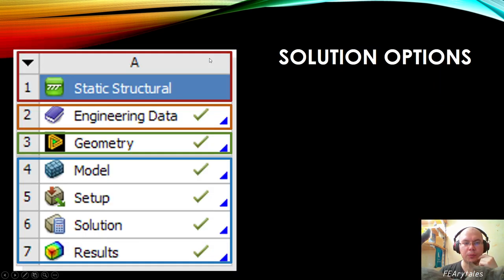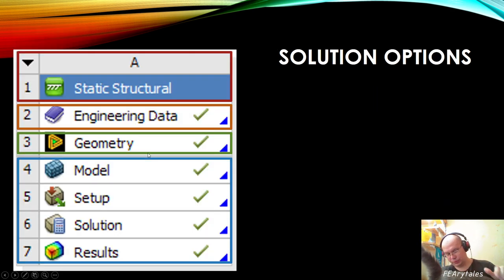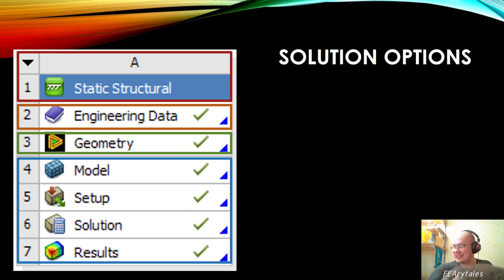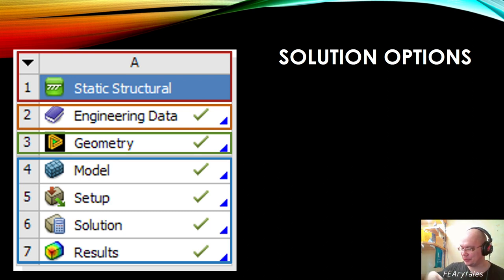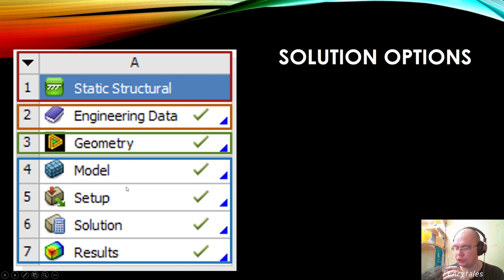Let's talk in more detail. This is an example of a solution object. My assistant Fluffy tried to help but did it in an interesting way. This is our object on the Project Schematic, and on different stages we can start different types of application.